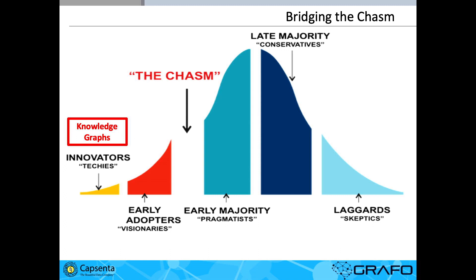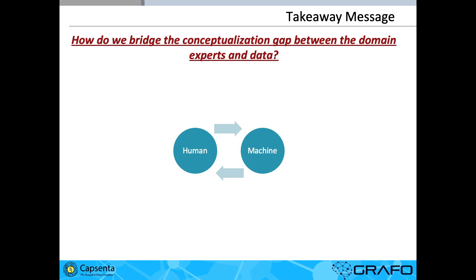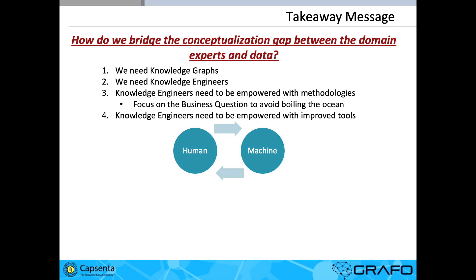So where do we go and how do we bridge this chasm? I believe that to bridge this chasm, we need the knowledge engineer, and we need to empower the knowledge engineer with tools and methodologies. To wrap up — this has been over a decade of academic and business engineering work — I started with this question: how do we bridge the conceptualization gap between the domain experts and the data? We need knowledge graphs. We need knowledge engineers. The knowledge engineers need to be empowered with methodologies. We need to focus on the business question so we do not boil the ocean. And we need to understand this balance between the human and the machine in the loop.